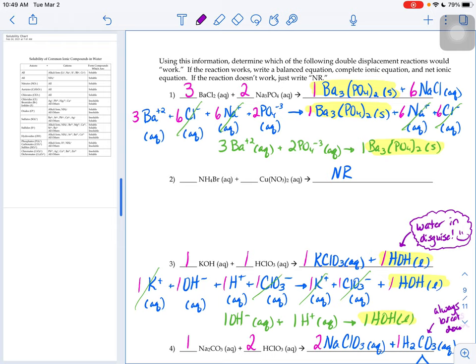For number one, we're reacting some aqueous barium chloride with some aqueous sodium phosphate. I know that's a double displacement reaction because I see a compound being added to another compound. The barium is going to go with the phosphate, the sodium is going to go with the chloride. Now we know the states of matter of our reactants because they provided it for us, but we do need to figure out the states of matter on our would-be products.